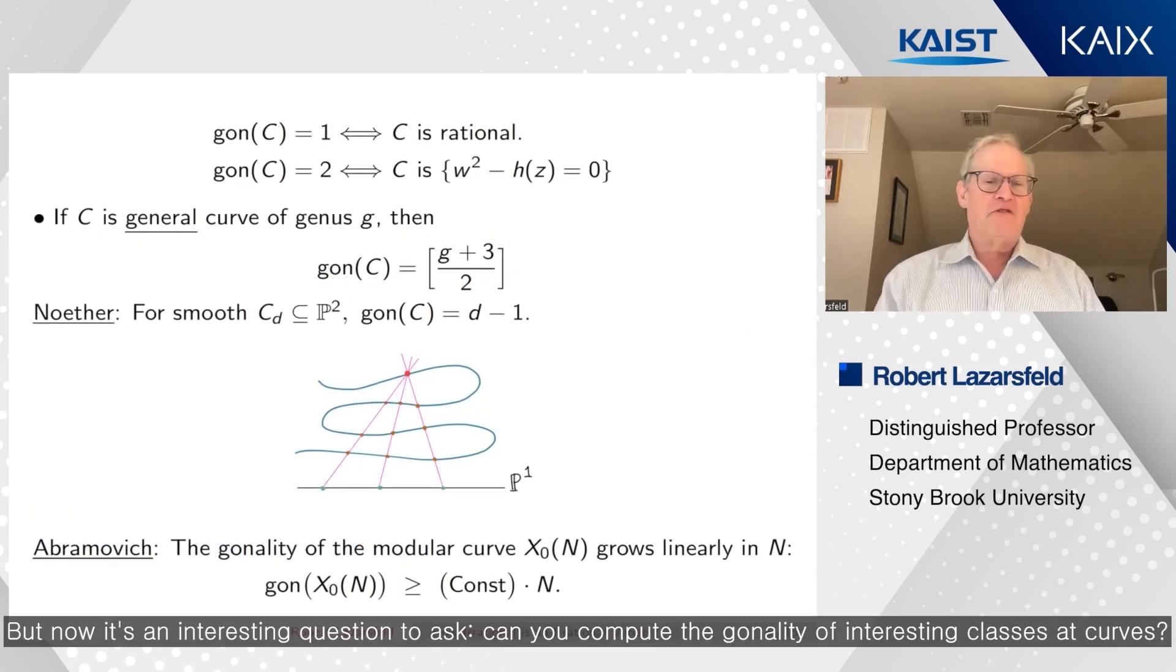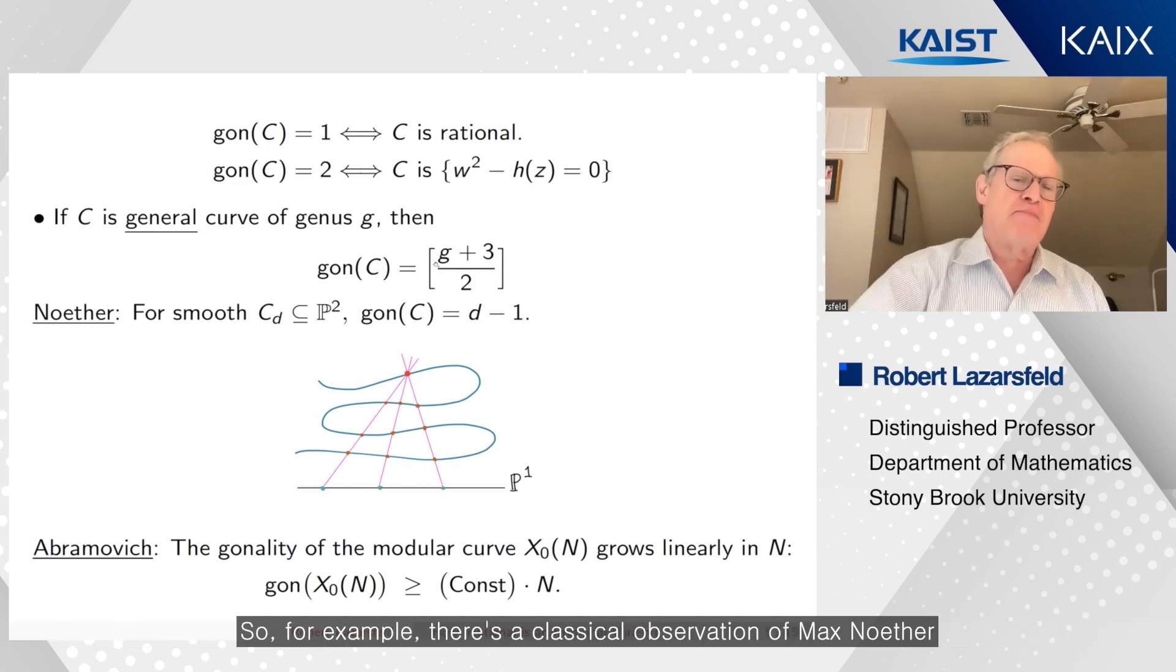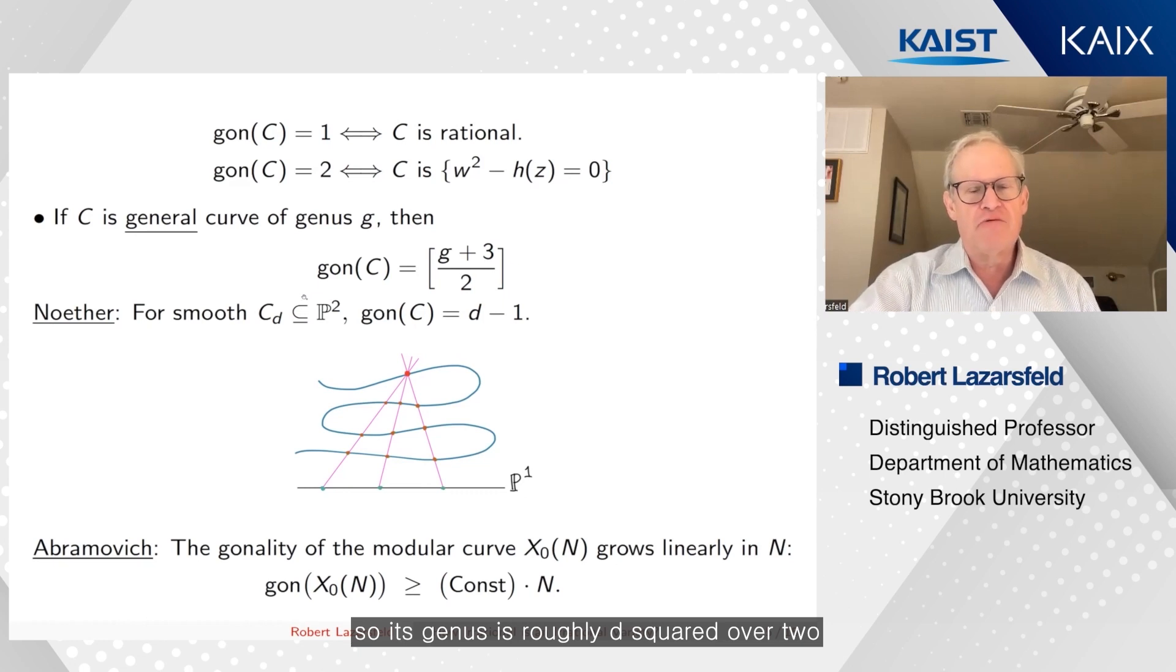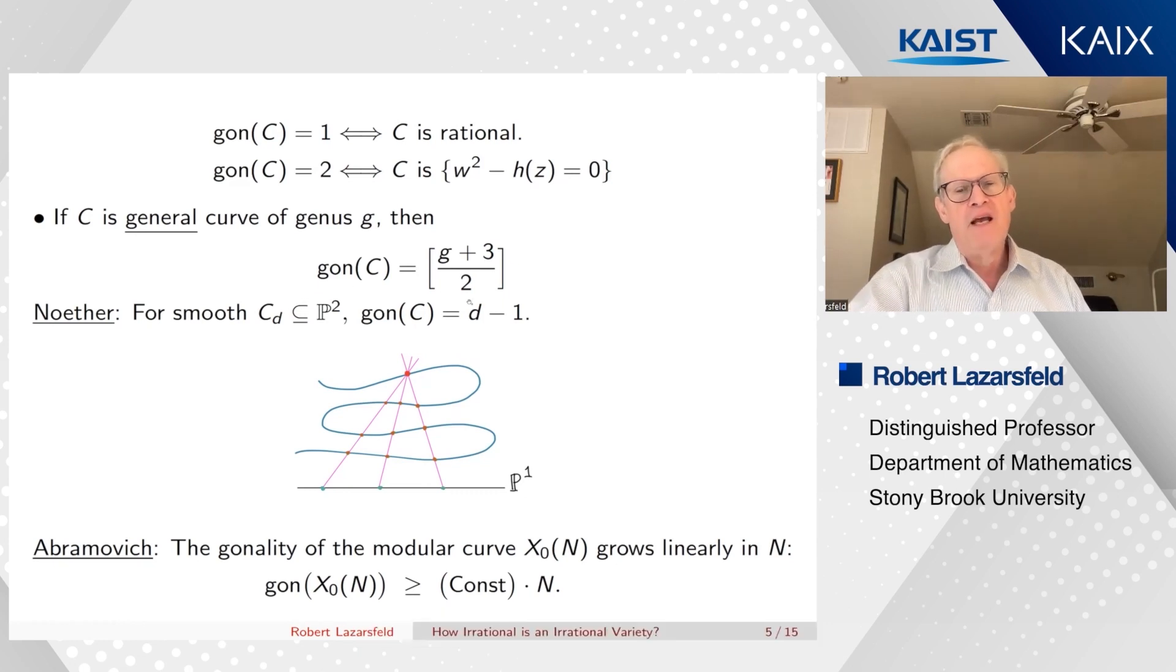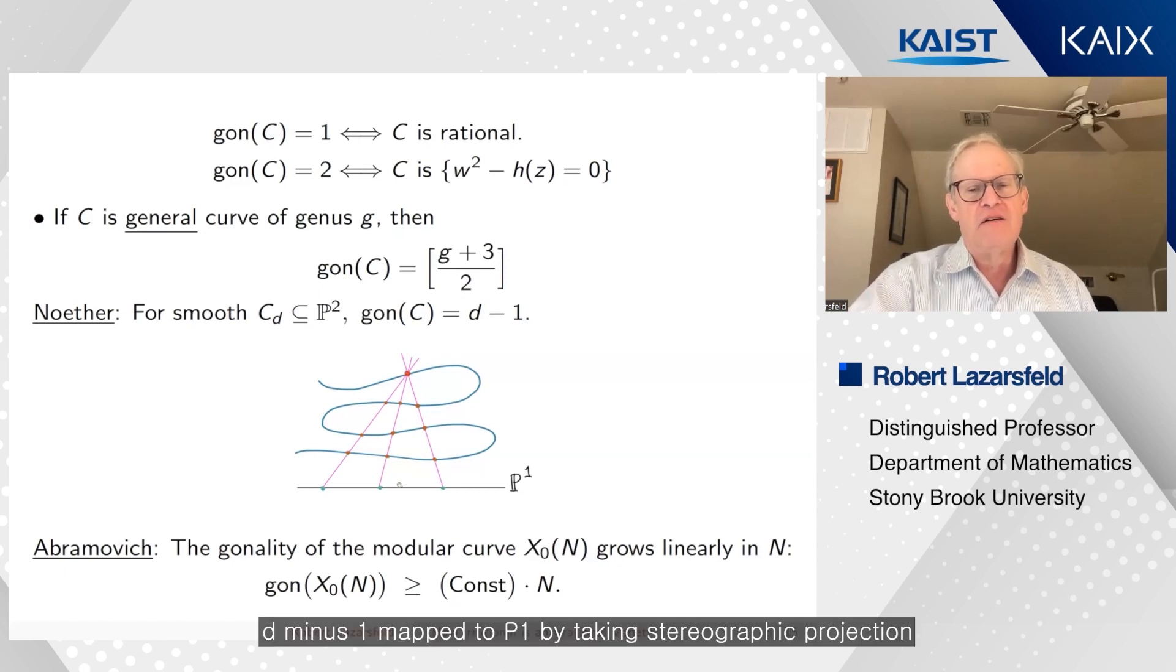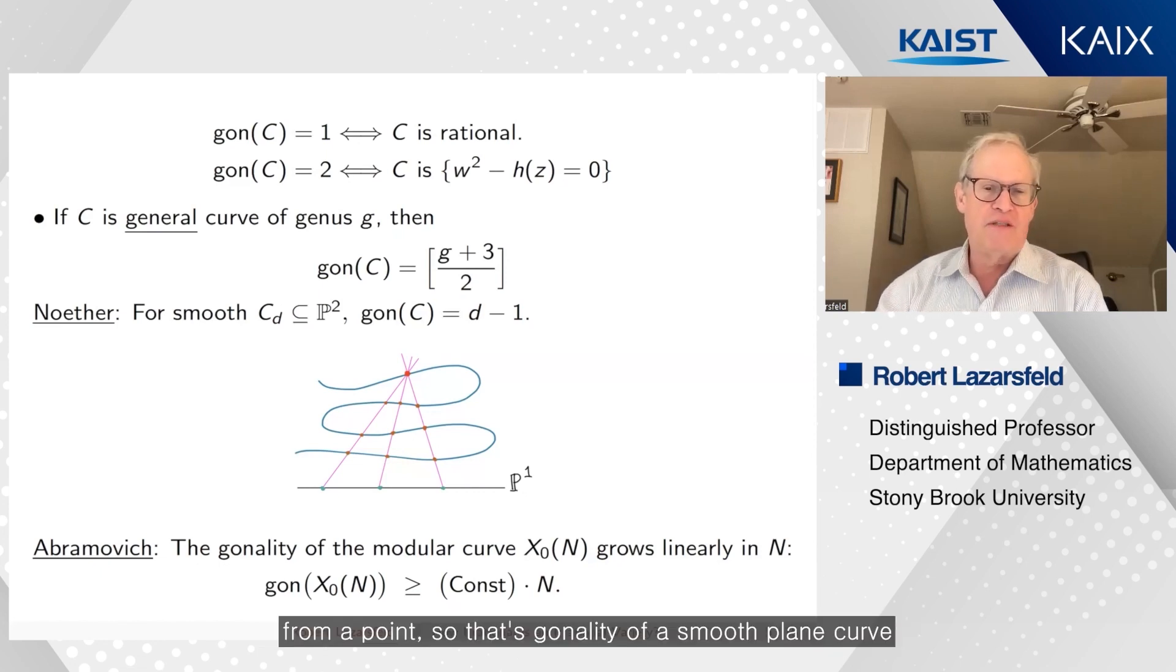But now it's an interesting question to ask. Can you compute the gonality of interesting classes of curves? So for example, there's a classical observation of Max Noether that says that if you start with a smooth plane curve of degree d, so its genus is roughly d^2/2, its gonality is d-1. And again, you get a degree d-1 map to P^1 by taking stereographic projection from a point. So that's the gonality of a smooth plane curve.